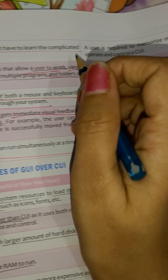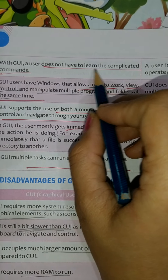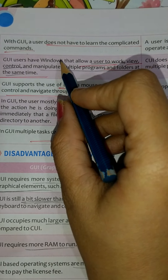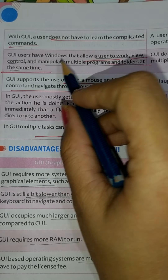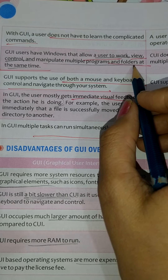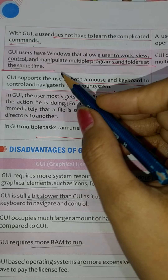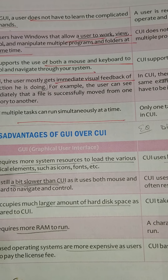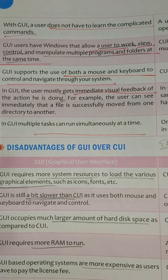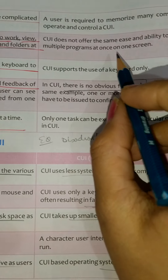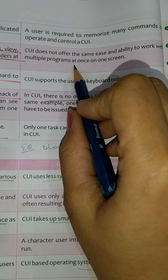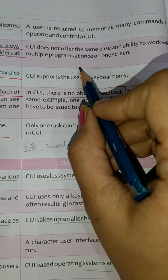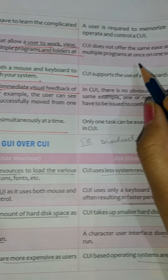In GUI, you do not have to learn complicated commands, but in CUI you have to memorize them. Next, GUI allows the user to work, view, control, and manipulate multiple programs and folders at the same time. For example, you can open MS Word, PowerPoint, Google Chrome, and play a song side by side. But this is not possible in CUI because you work with commands — you write one command, get the answer, and only then write the next. You cannot run multiple programs at the same time in CUI.